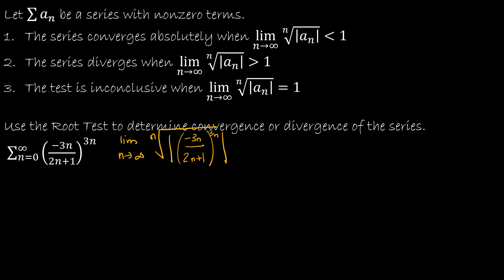Now the great thing about the root test is the nth root and the n exponent cancel each other out. So that gives me the limit as n approaches infinity, and now all of a sudden that root is gone. So I have the absolute value of negative 3n over 2n plus 1, all to the third.